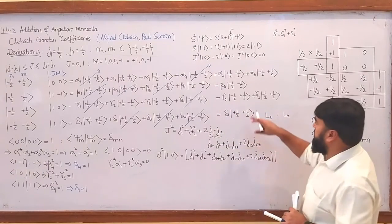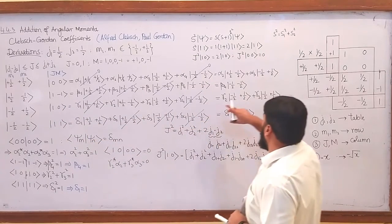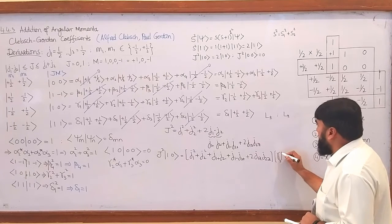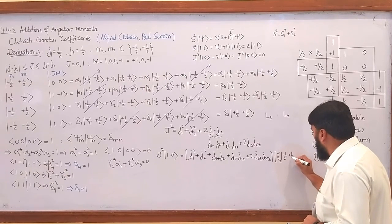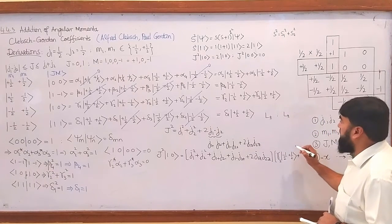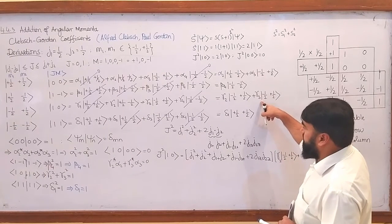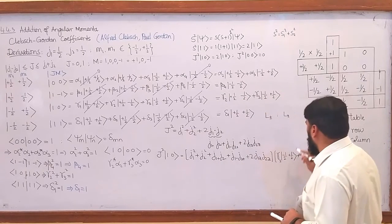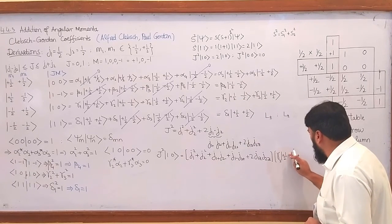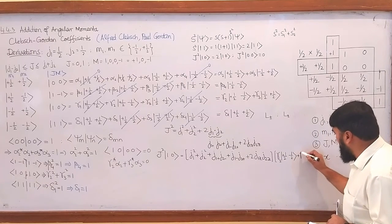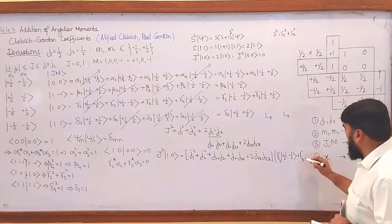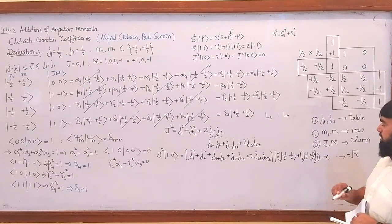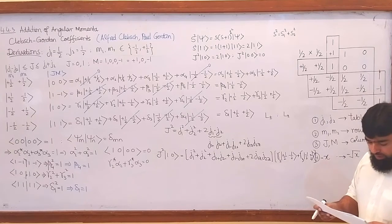The |1,0⟩ state is expressed as: γ₂|+½, −½⟩ + γ₃|−½, +½⟩. We are having +½ for the first particle and −½ for the second in one term, and −½ and +½ in the other. Now we apply all the operators from the expansion of Ĵ².